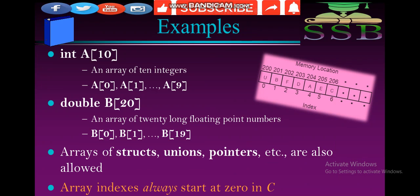In C language, memory locations are 200, 201, 202, 203, 204, 205, 206 and we have memory address, value, and data. The starting index is from 0, 1, 2, 3, 4, 5 and so on. The index always starts from 0 in C language.